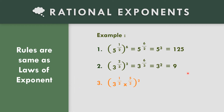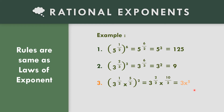How about number three? The quantity three to the one-half times x to the five over two, raised to the second power. Copy the base three: one-half times two equals two over two, which is one, so three to the one. Copy the base x: five over two times two equals ten over two, and ten divided by two is five, giving x to the fifth power. The final answer is three x to the fifth power.